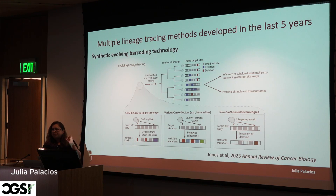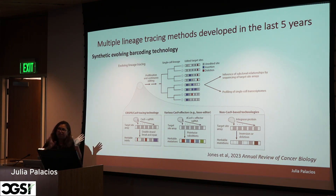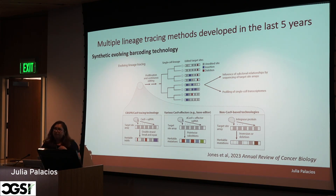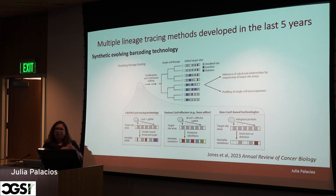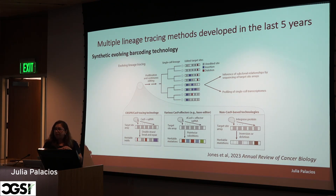Today I will focus on a particular type of lineage tracing technology called synthetic evolving barcode technology. The idea in these methods is to insert a completely artificial barcode — a sequence of nucleotides — into a cell and let this barcode, this locus of many base pairs, evolve over time. You start with one single cell, let it evolve and duplicate, and then after weeks or days you sequence the cells. You can identify the barcode and you will see insertions and deletions in the barcode of different cells.